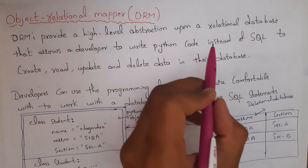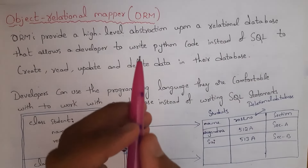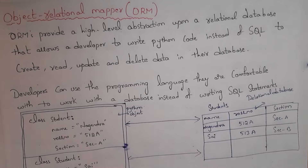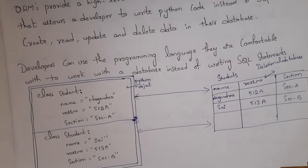Instead of SQL, we can use Python code to create, read, update, and delete data in the database. Directly by using Python code itself we can perform all these operations. Developers can use their comfortable programming language in order to work with a database instead of writing SQL statements.